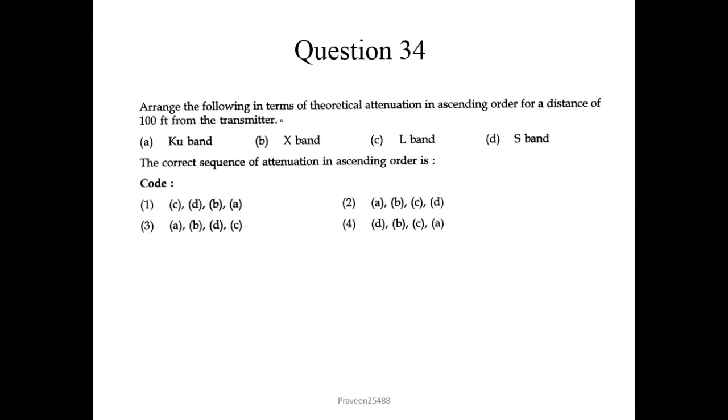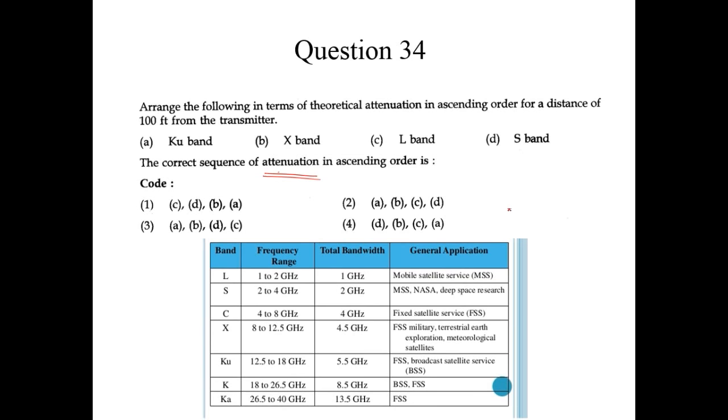Now question number 34. Arrange the following in terms of theoretical attenuation in ascending order for a distance of 100 feet from the transmitter. So here the bands are given. The correct sequence of attenuation in ascending order. So we know that the attenuation linearly increases with the frequency. If you know the frequency range of bands, we can easily make the sequence of attenuation. So this is very common question in UGC NET exam. In every exam they ask questions from this context. So here for Q band it is 12.5 to 18 GHz. For X band it is 8 to 12.5 GHz. For L band it is 1 to 2. And S band it is 2 to 4 GHz.